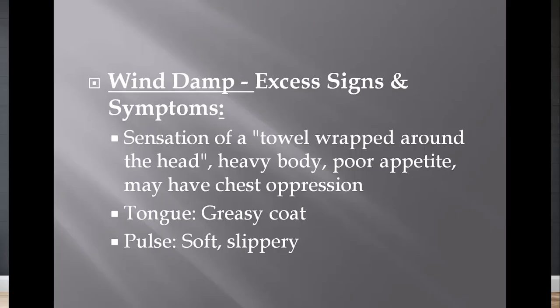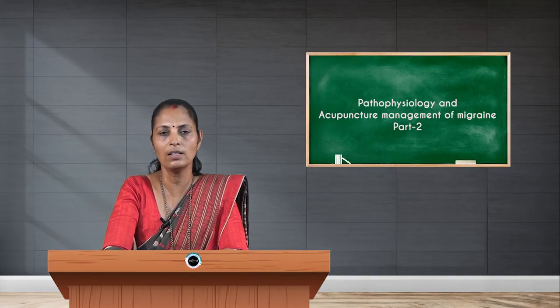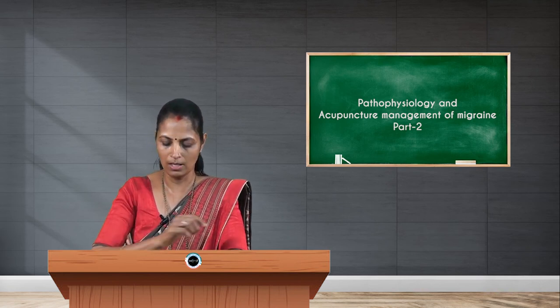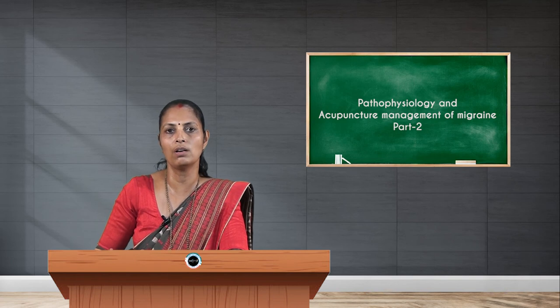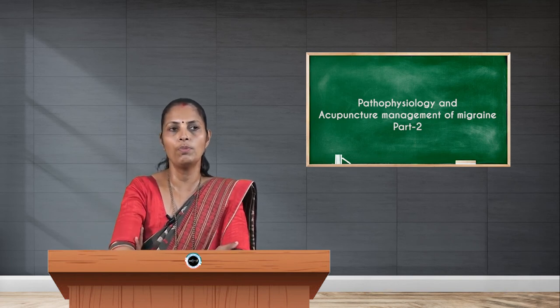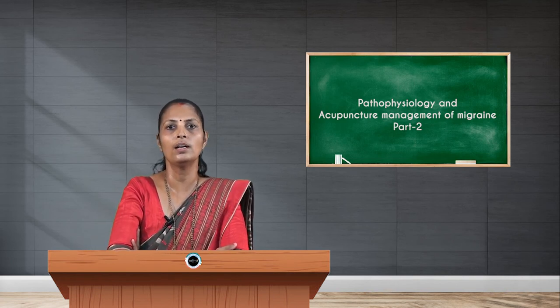The third pathogenic factor is wind damp. Symptoms include a sensation as if a towel or band is tightly wrapped around the head, heaviness in the body, poor appetite, and chest discomfort. When we look at the tongue, there is a greasy coat. When we palpate the pulse, it may be soft or slippery.